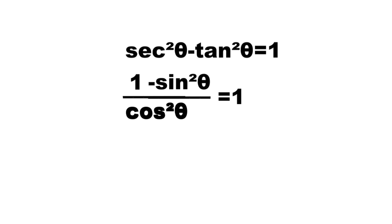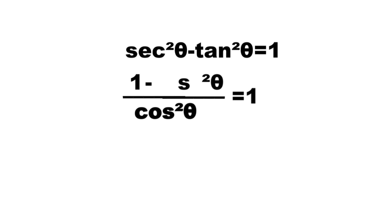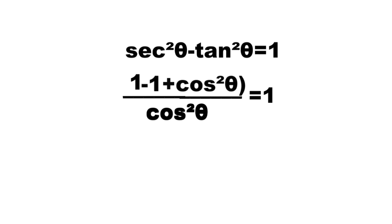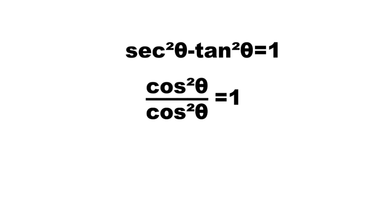These are all equal to 1. From Pythagorean identities we have sine squared theta is equal to 1 minus cosine squared theta, which are all over cosine squared theta. The numerator becomes 1 minus 1 plus cosine squared theta. Since 1 minus 1 is 0, this is now cosine squared theta over cosine squared theta.